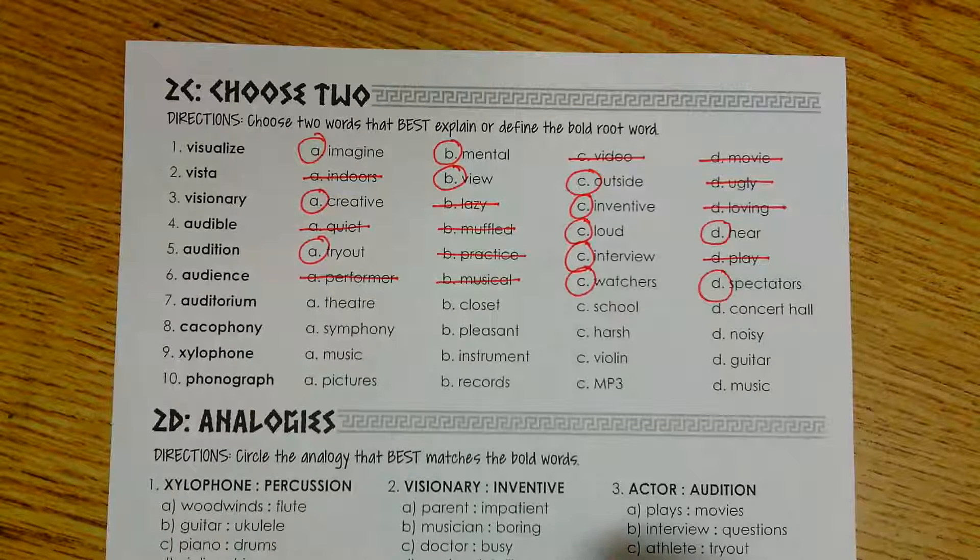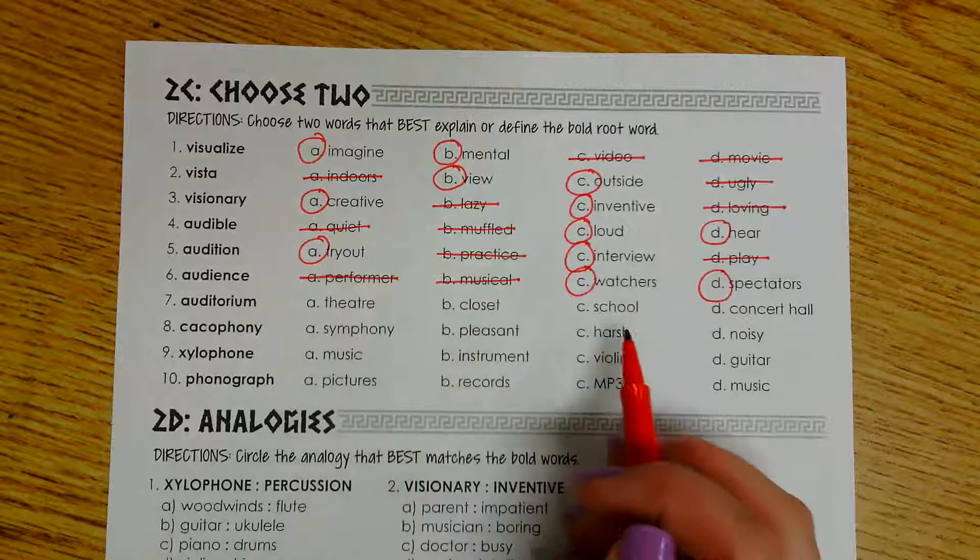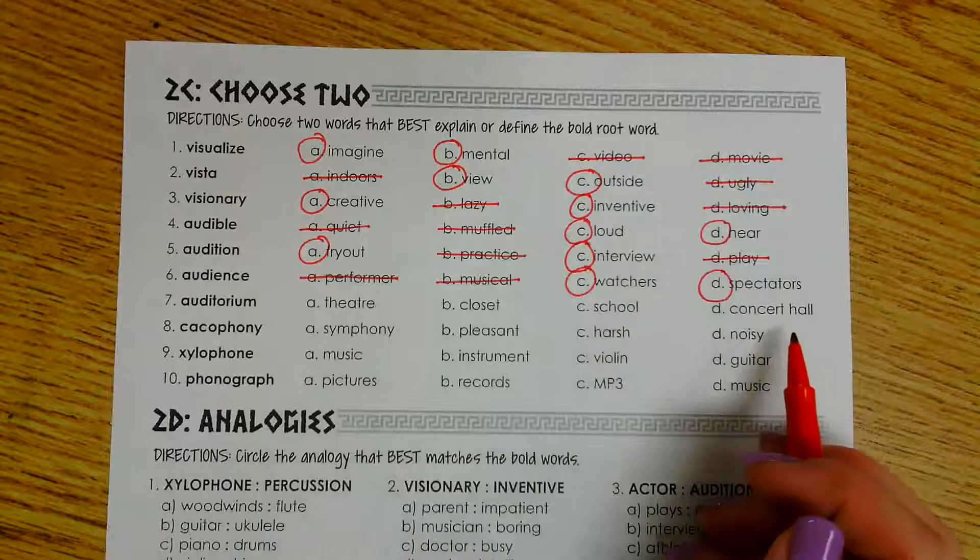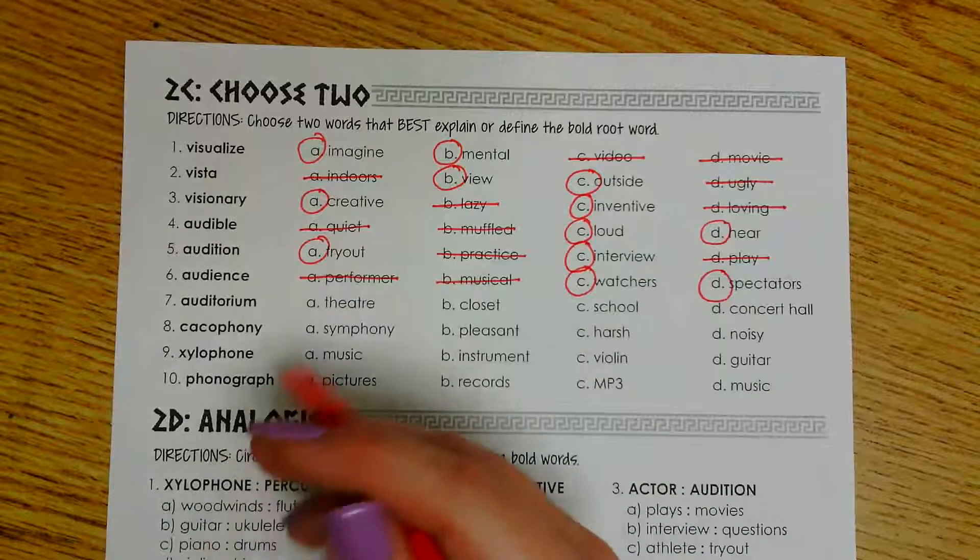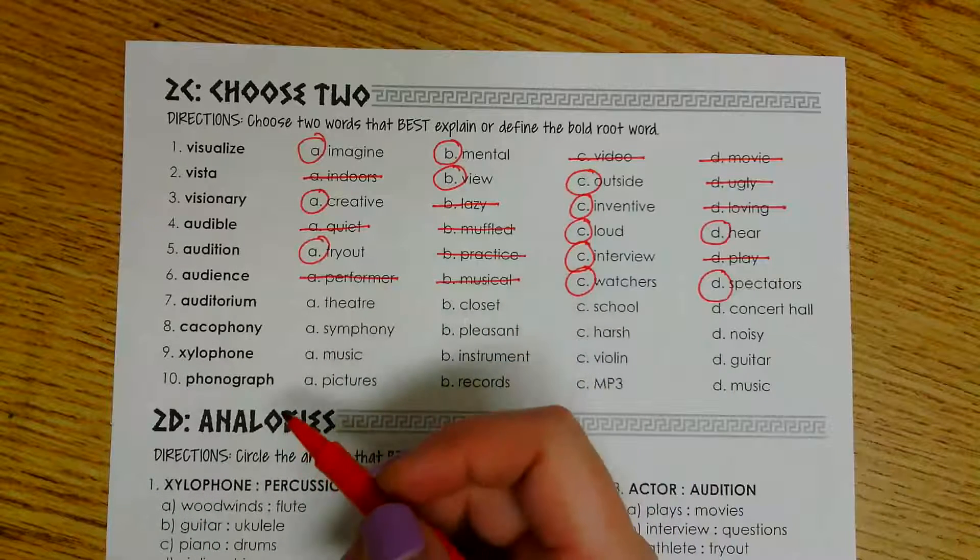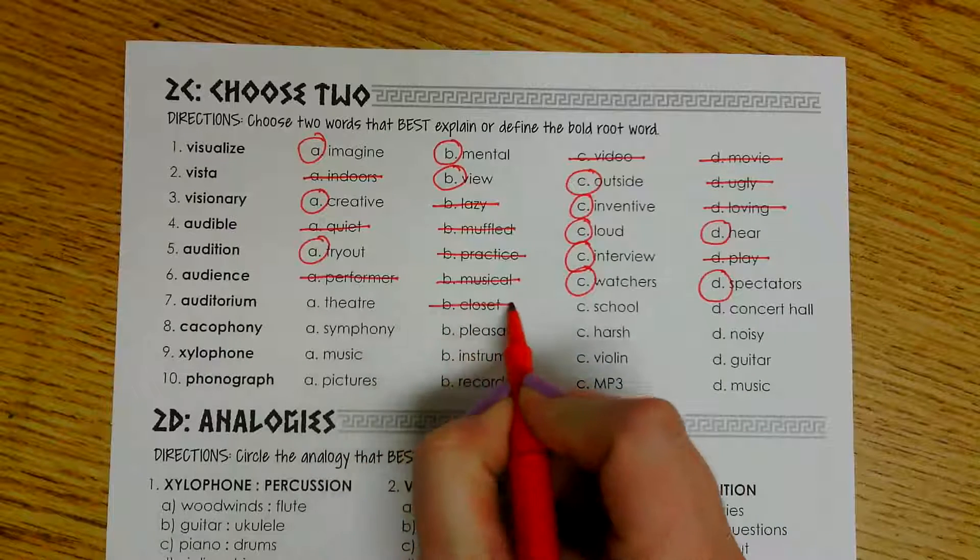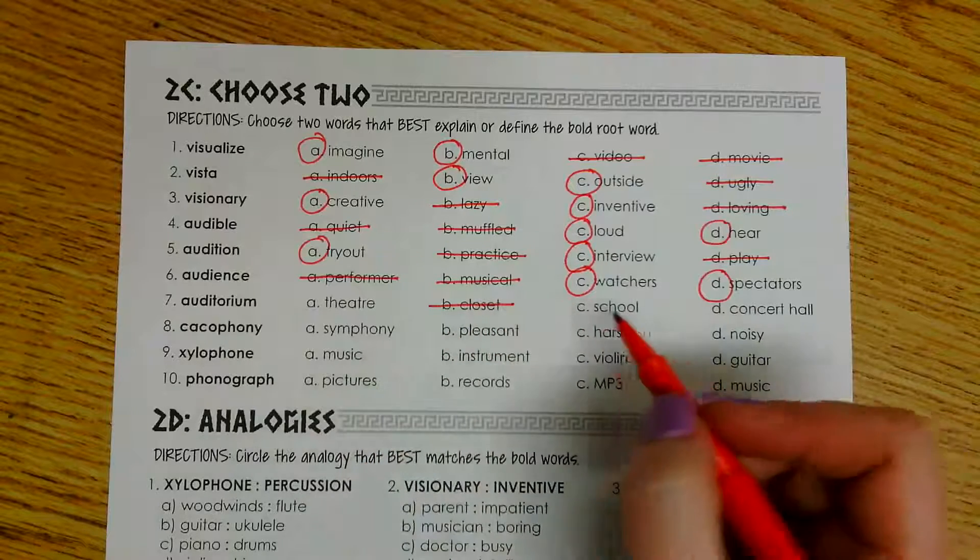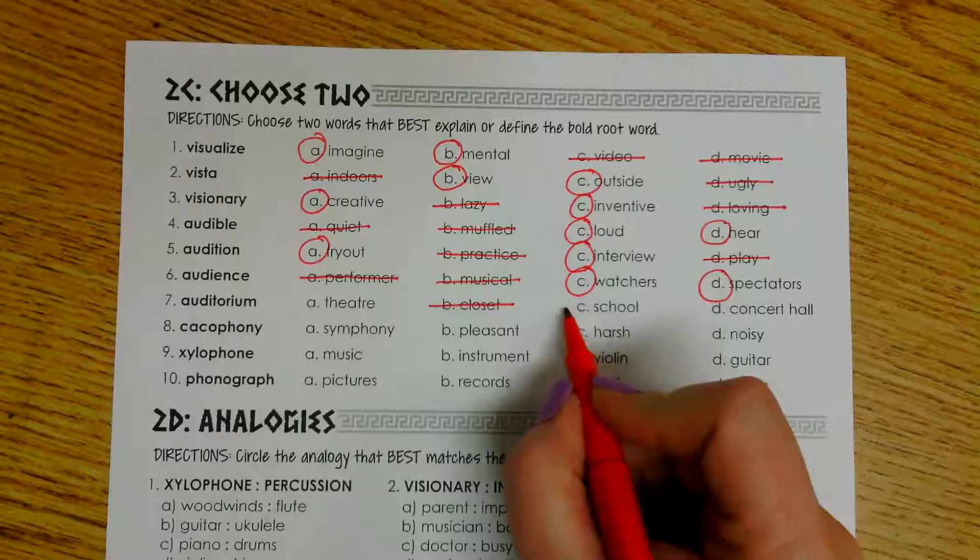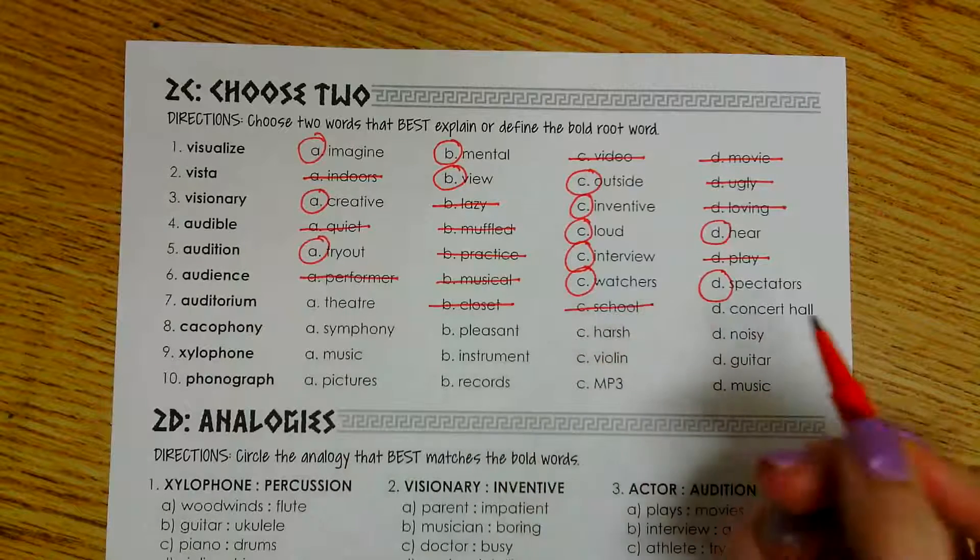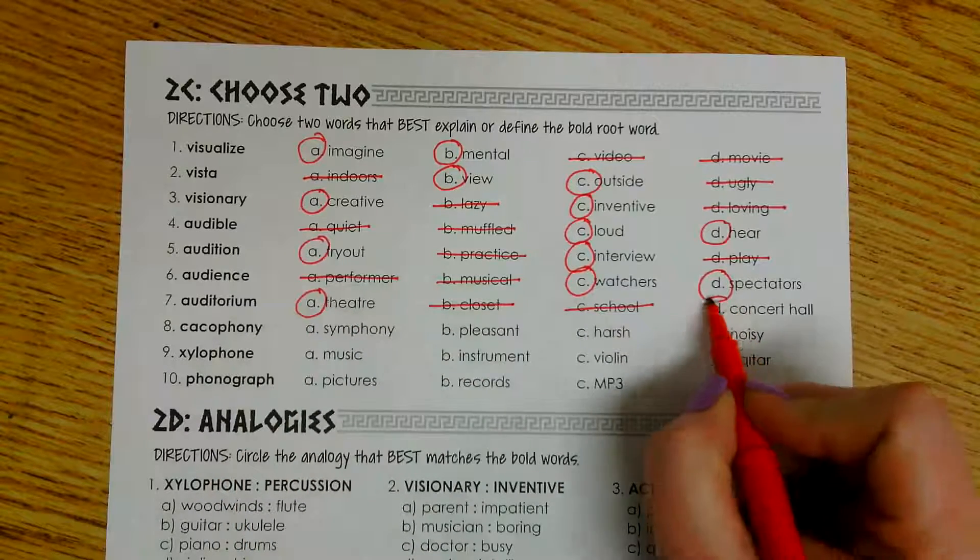Number seven is the word auditorium. We have theater, closet, school, and concert hall. An auditorium is going to be a large room where a show or concert or something like that is taking place. So that's not going to be in a closet. And there are auditoriums at school, but that does not mean that the school itself is the auditorium. So I'm going to go ahead and mark that one out also. So that leaves me with a theater and a concert hall.